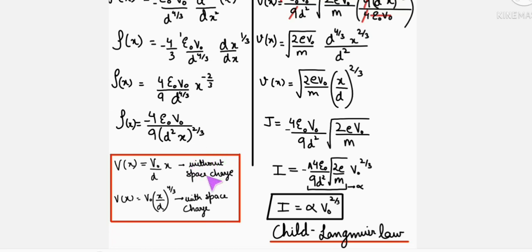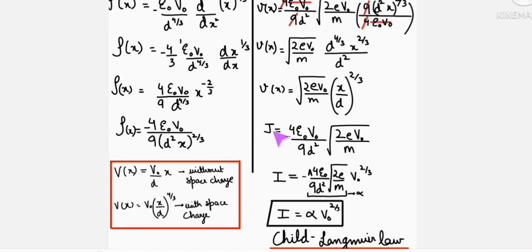Without space charge, potential varies one way, and with space charge, potential varies differently. This J, the current density, we can write as I upon A. From here, I equals minus A 4 epsilon naught by 9 D square, under root 2 E upon M, V naught whole square raised to 2 by 3.